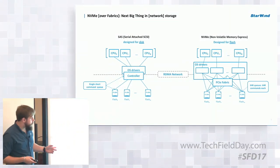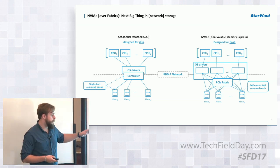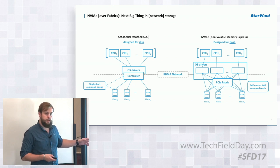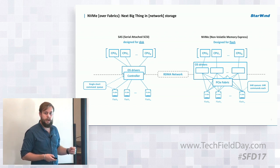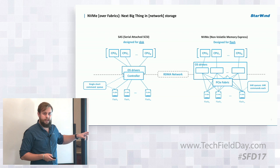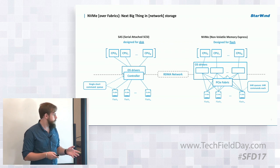On the right, with NVMe, we have pretty much the same layout. Individual drives are connected to the OS drivers through the PCIe fabric, and there is no dedicated controller here. Each drive has its own controller, and connectivity from the drives to the OS has a different command set. We have more queues, and each queue is much, much longer. In the OS driver, each NVMe drive is virtually paired or mapped to a particular CPU core, which becomes a service core for processing IO.